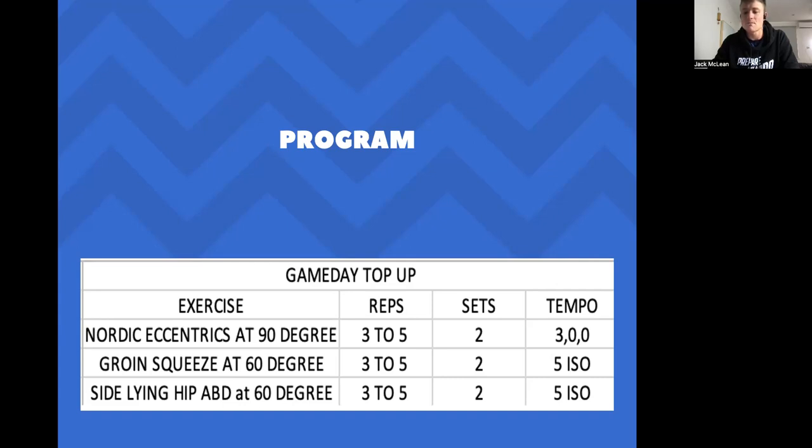If it's a groin injury, then it'll be an extra groin squeeze, or if they need some extra work with their glute strength, then we'll add in the side-lying hip abduction or the specific degrees of knee flexion that we use for testing. Tempo is really important, so three seconds of eccentric tension on the nordic drops, eccentrics, five-second isometric squeezes, maximal effort with the groin squeeze and side-lying hip abduction to improve their force production in these areas.